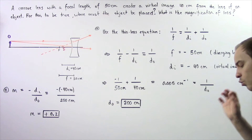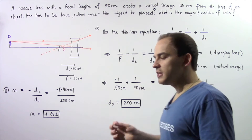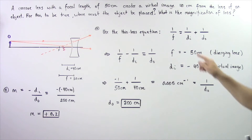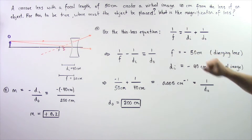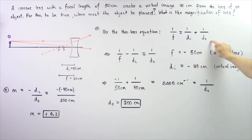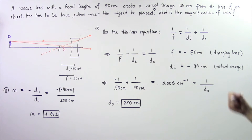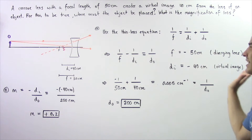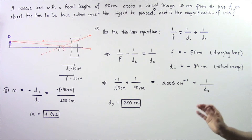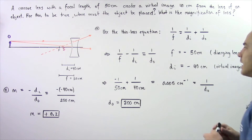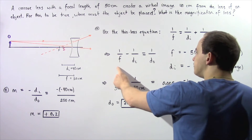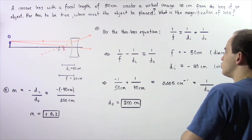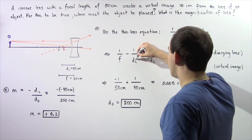In part A, we want to apply the thin lens equation, which states that 1 divided by the focal length is equal to 1 divided by the image distance plus 1 divided by the object distance. We're looking for the object distance, so let's bring what we know to the left side and leave what we don't know on the right side. So 1 divided by the focal length minus 1 divided by the image distance is equal to 1 divided by the object distance.